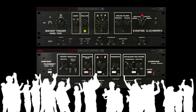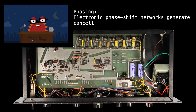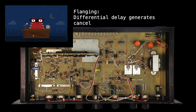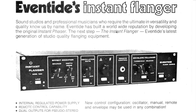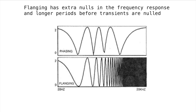First, let's talk about the difference between phasing and flanging. Phasing is an effect obtained by using electronic phase shift networks to generate cancellations in the frequency spectrum of a signal. Flanging is an effect obtained by using differential delay to generate cancellations in the frequency spectrum of a signal, regardless of the method used to generate the delay. Flanging has a more pronounced effect than phasing because of extra nulls in the frequency response and due to longer periods before transients are nulled out of the final result.